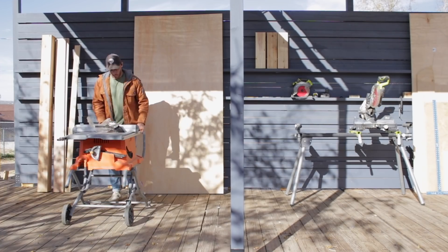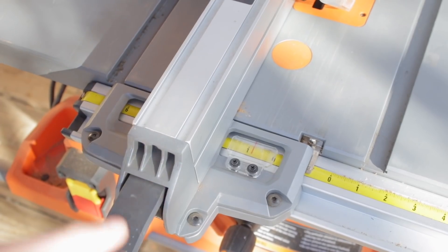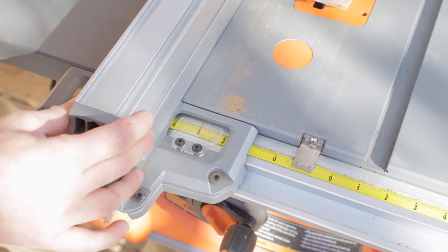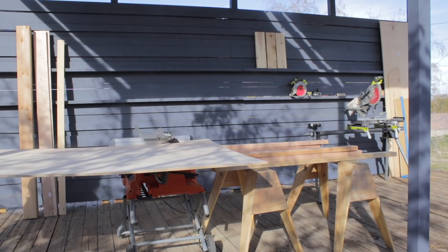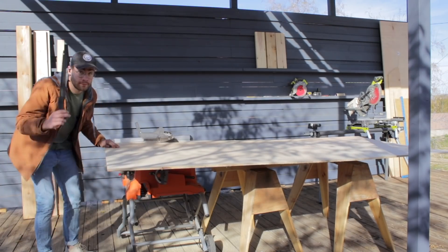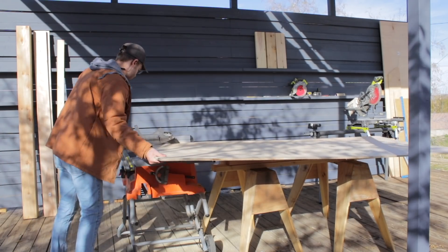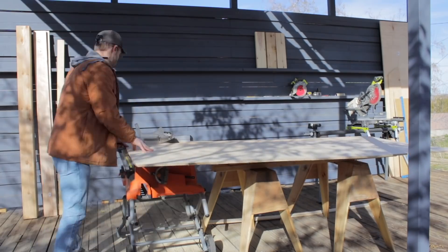I started this project by wheeling out my table saw. I'm gonna be ripping down a half inch sheet of plywood into three inch wide strips. Now I broke down this entire sheet of plywood because I was experimenting. I didn't know how many of these strips I would need. In the end though, I didn't even use half of this sheet of plywood.